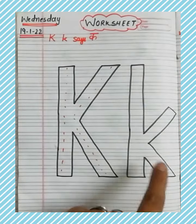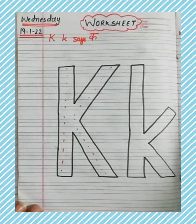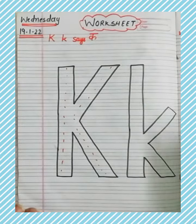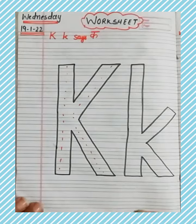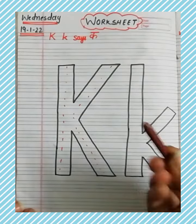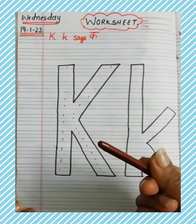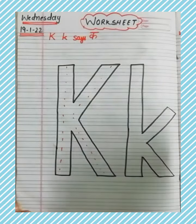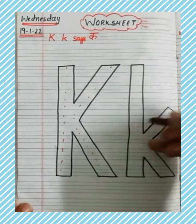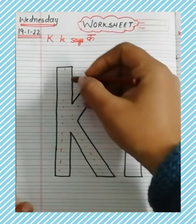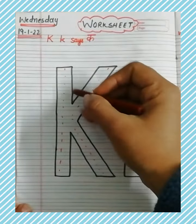How to write small K? आपने अब rainbow राइटिंग करनी है. Rainbow राइटिंग किसकी हेल्प से करनी है? Crayon colors की. आपने पहले capital K बनाने कैसे बनाएंगे?